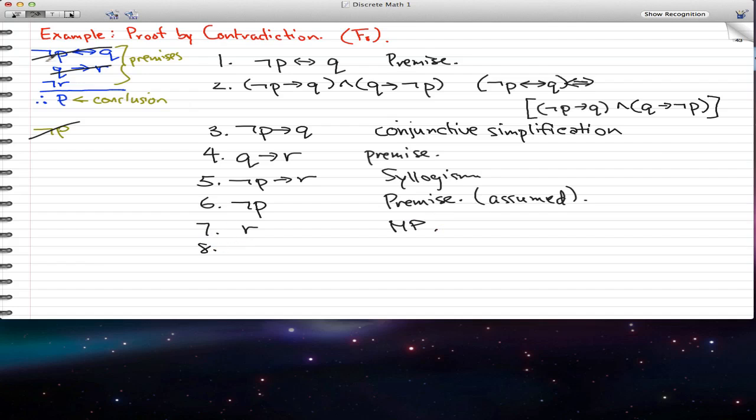The eighth step is, we're just going to apply our last premise, negated r. This is our premise. And for 9, we have r and negated r. And we know that this is pretty much logically equivalent to false. So that is one of our inverse laws from the laws of logic.